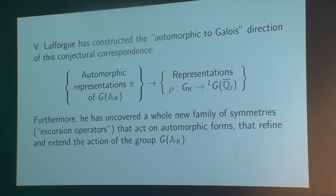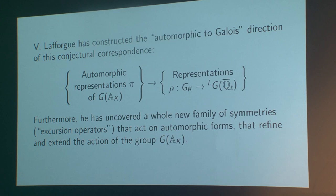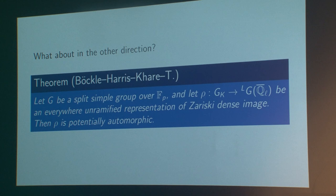What do we know about this? In recent work, Vincent Lafforgue has constructed the automorphic-to-Galois direction of this correspondence for any reductive group G over a function field. So we're in as good a situation here as we are for regular algebraic forms over number fields. I think this is really one of the most exciting things to happen in number theory for a very long time, and I strongly urge you to attend his plenary lecture on Thursday. Once you have one direction of the correspondence, the natural question is: can you go back in the opposite direction?